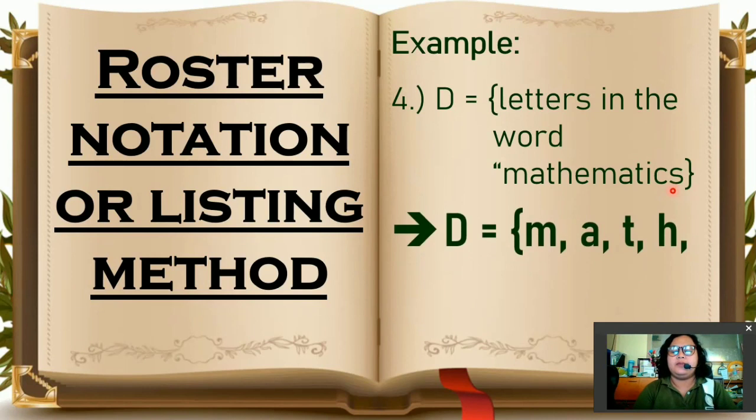So it would be set D. The elements are M, small letter M only, small letter A, small letter T, H, E. So the next letter should be M. Since there will be no repetition, the next one. The same with A, the same with T. The next one will now be I, letter C, and then last would be letter S. So from 11 letters, it would only be 8 letters.